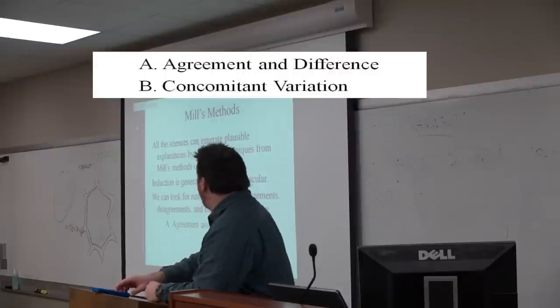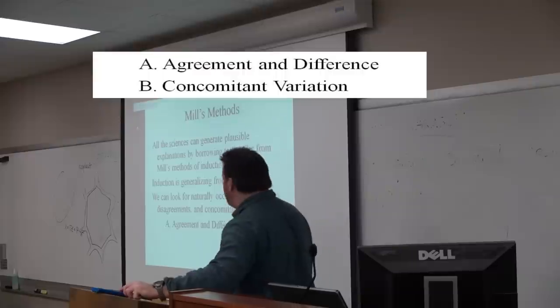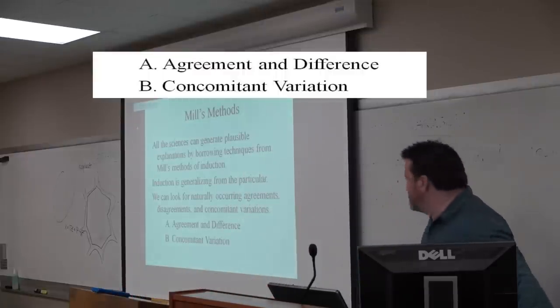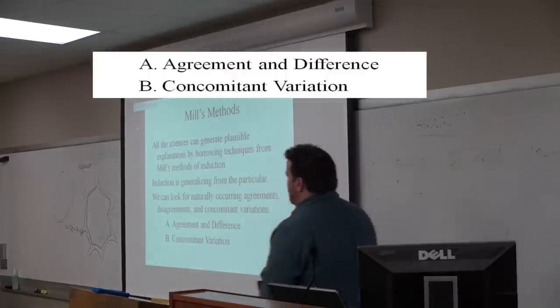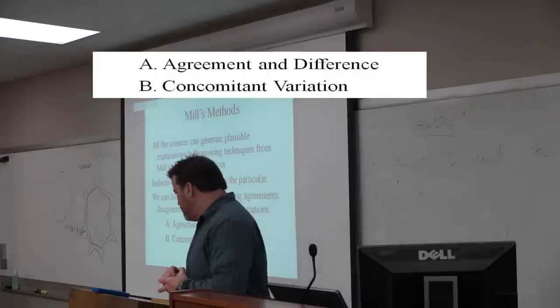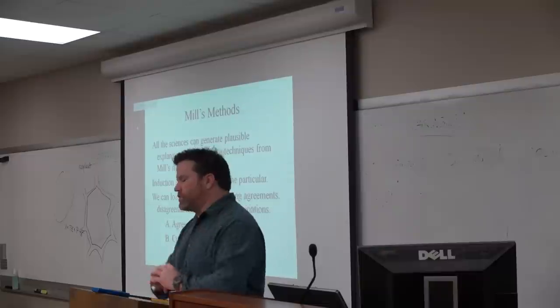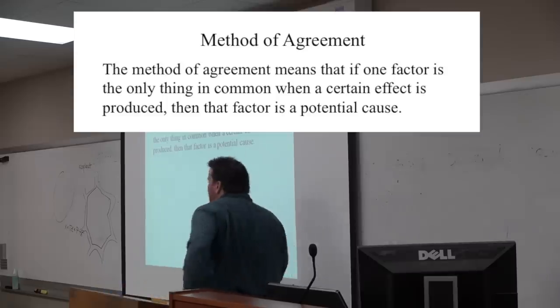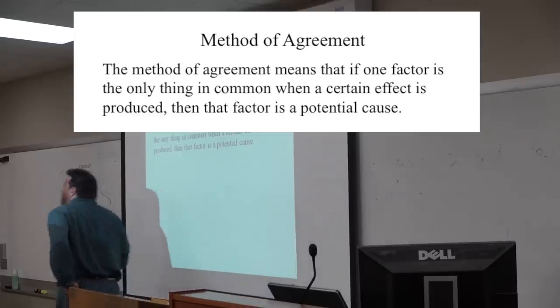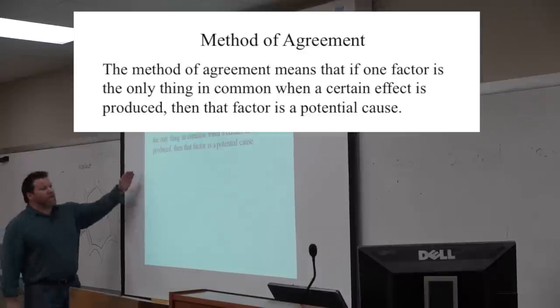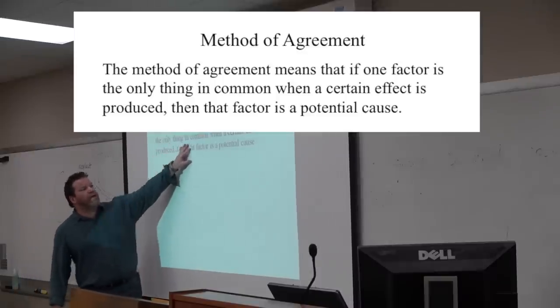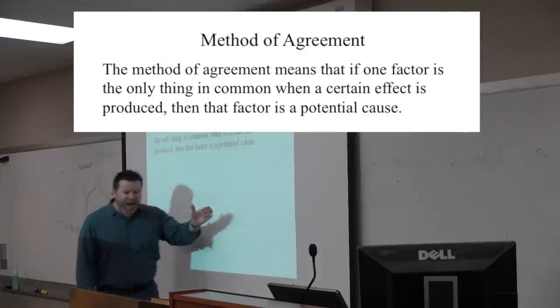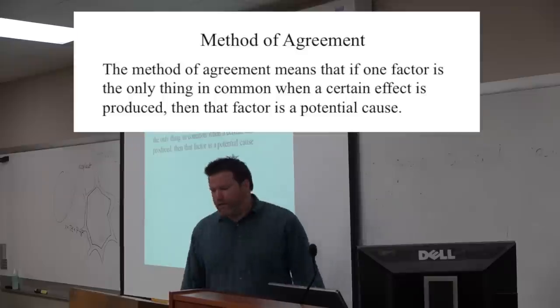So let's see how this might work. We're going to get agreement and difference and concomitant variations. We're going to want to know how do these work in practice. Method of agreement. We can state it fancily this way. The method of agreement means that if one factor is the only thing in common when effect is produced, that factor is a potential cause.